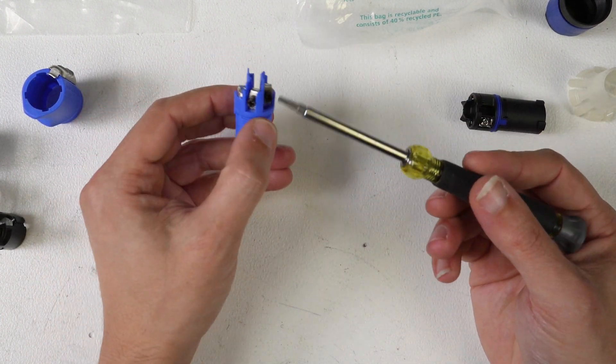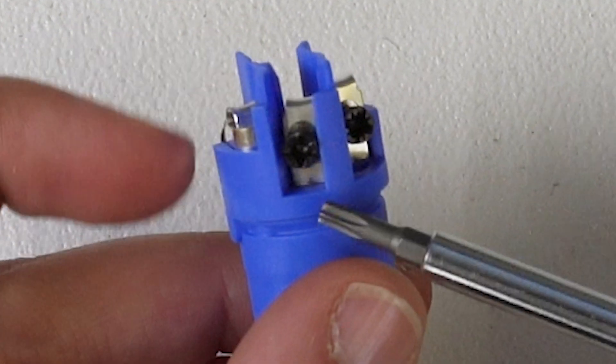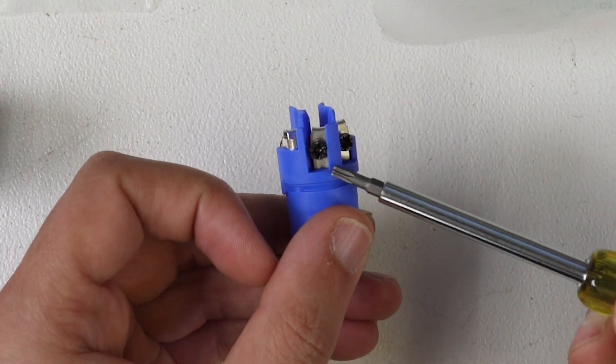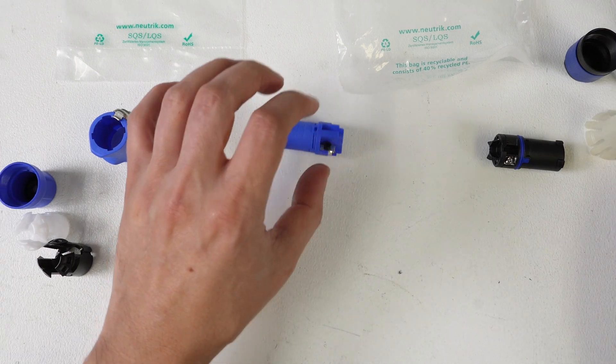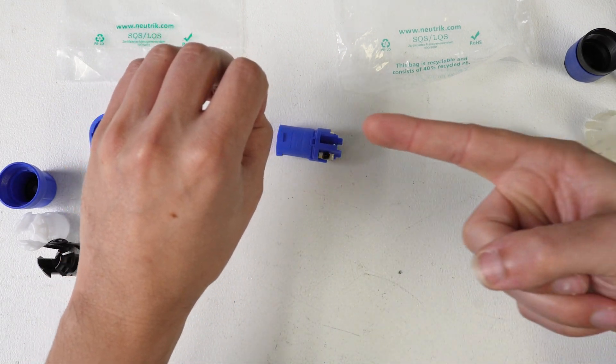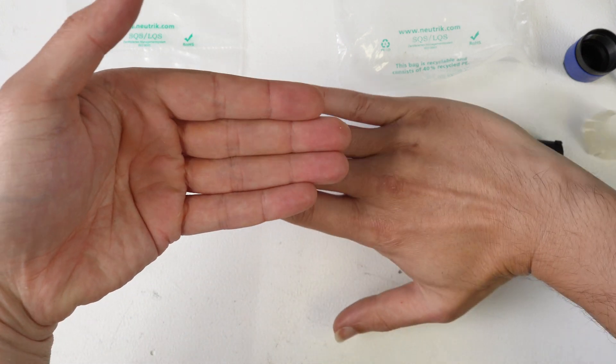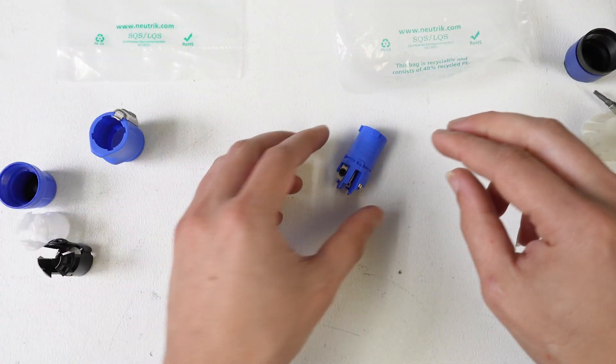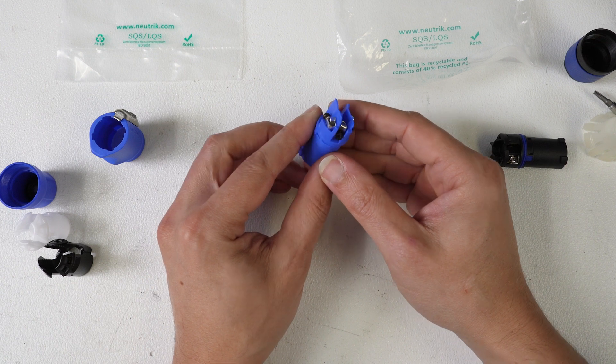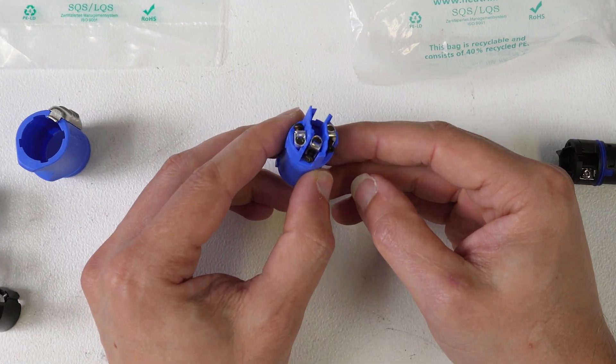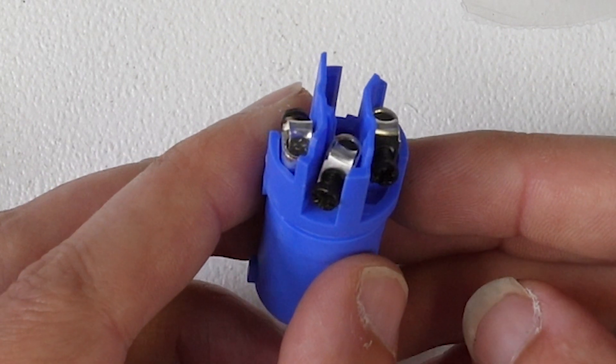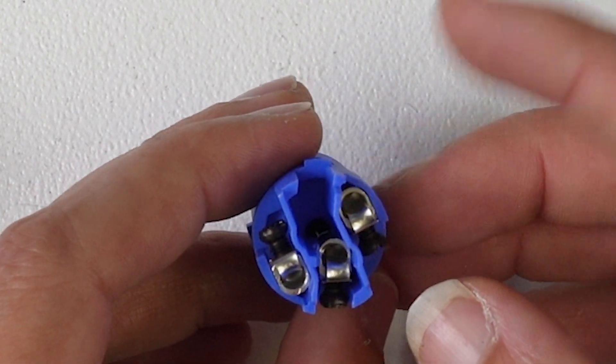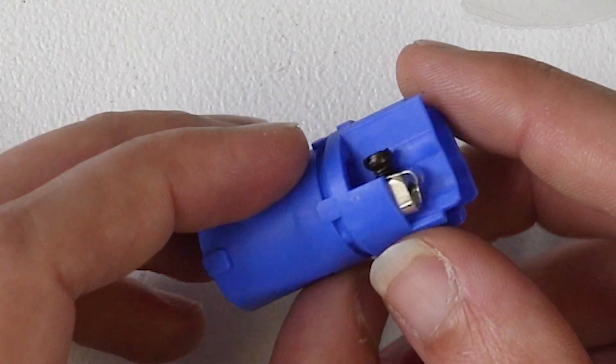This was always kind of one of my problems with PowerCons. This screw right here is actually a Pozi drive, this isn't a Phillips, this is a Pozi. Basically the way that it works is there's a collar like this, you stick your cable in here like this, and then there's a piece of metal that goes down. There's a screw that goes in here and it forces a piece of metal down, and that's what clips the cable in. So I'm just gonna hold this right here and do some zooming so you can see what this looks like.